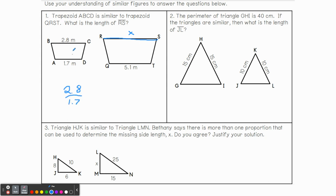We're only given two measurements here, so we can only use those two. Now, 2.8 — BC — corresponds with RS, so x is going to be on the top. AD corresponds with QT, so 5.1 will be on the bottom. Hopefully you can see why corresponding side lengths matter, because that's how we determine what our missing side length is going to be.